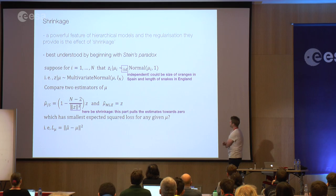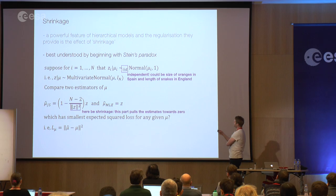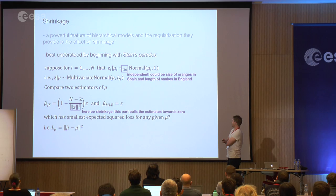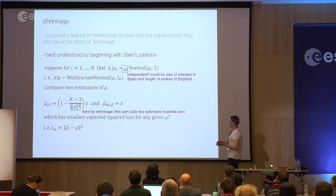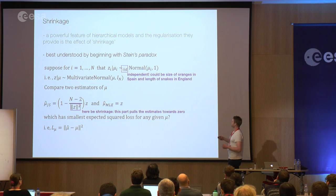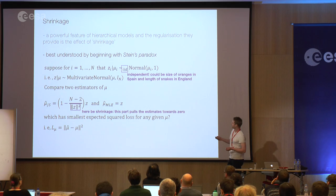The objects we're observing are not inherently related. We could be estimating the typical size of oranges in Spain and the length of snakes in England — we have no model for why these numbers might be similar. But the paradox is that we find it's better to consider both numbers when estimating each one than treating them entirely separately, which is really weird.